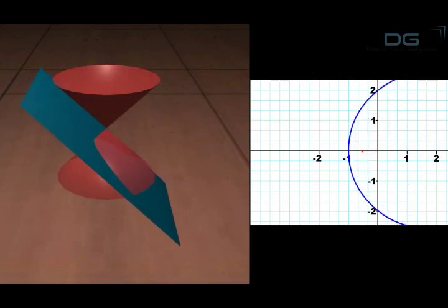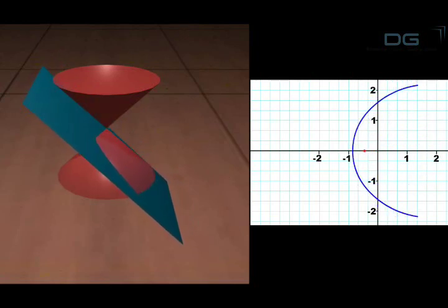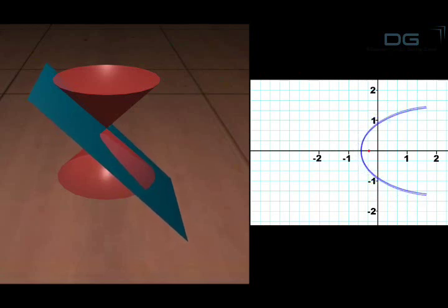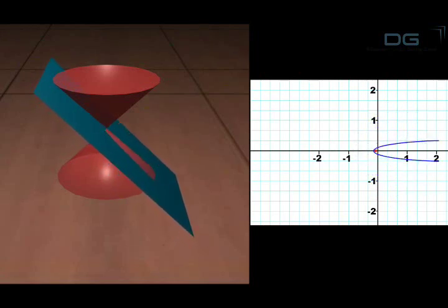That is to say, as the distance of the cutting plane from the common vertex increases, the parabola gets wider and vice versa.